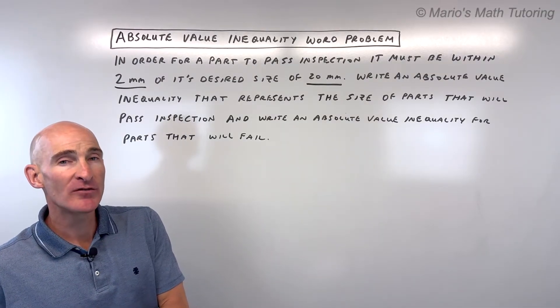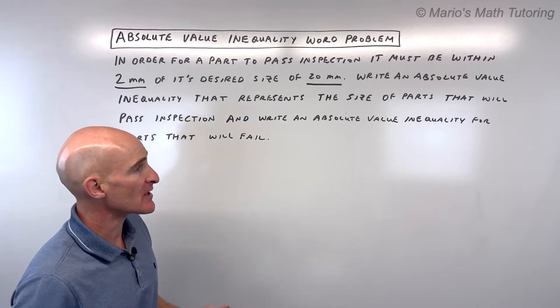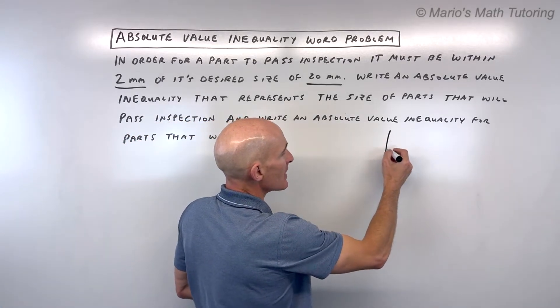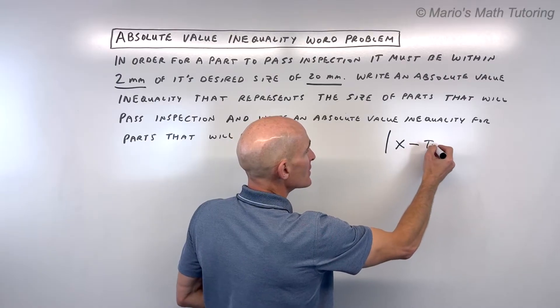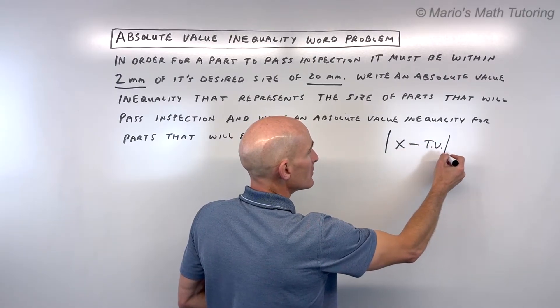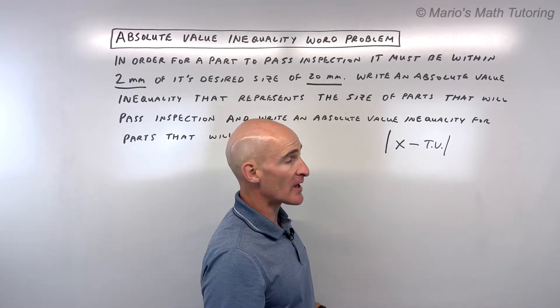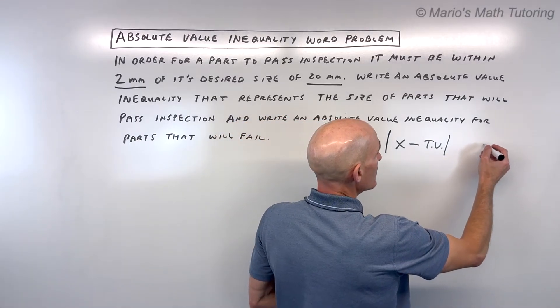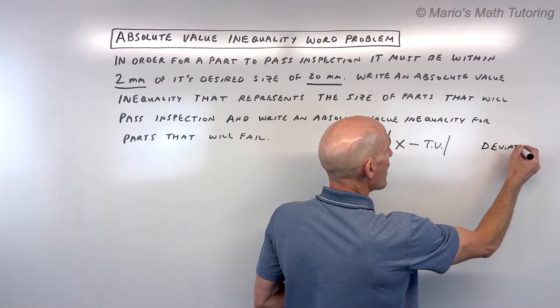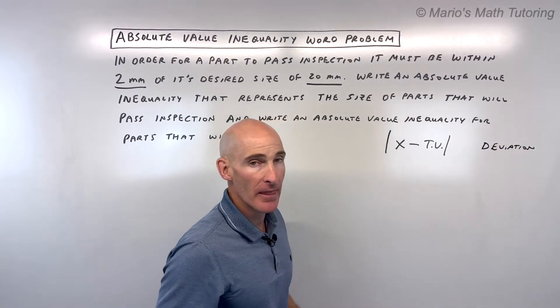When doing absolute value inequality word problems, I like to think of this as a template: x minus your target value is greater than or greater than or equal to or less than or less than or equal to the deviation, meaning how far off you are.